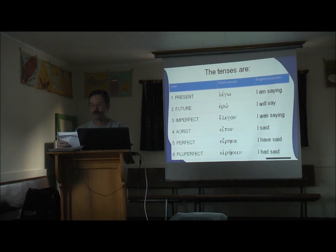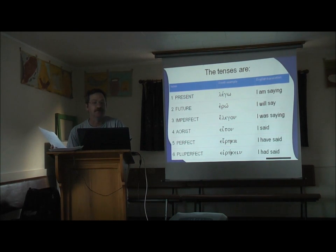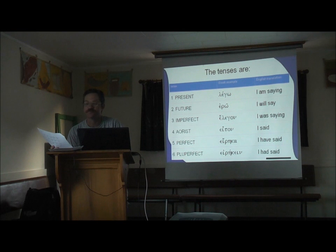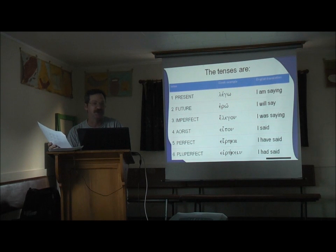Now look at chart eight, the aorist tense. In the aorist tense, if it is a first aorist, you're going to have the augment, and then you're going to have the stem. And then you're going to have a person and number suffix, and it's going to be a different one. In fact, before the person and number suffix, there's going to be a sigma.